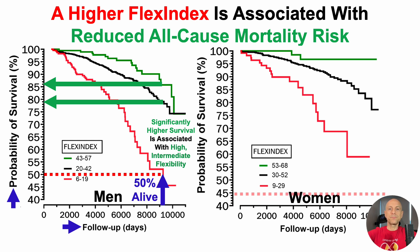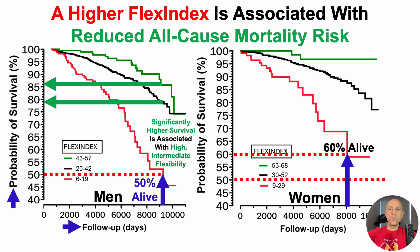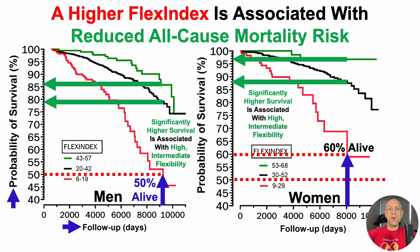What about in women? Looking at 60% survival — since none of the groups reached 50% survival — that's when 60% of the lowest-scoring red group was alive and 40% had died. At that time point, the highest flexibility index score group for women had only about 3% to 4% died, whereas the lowest scoring group had 40% died, and the intermediate flexibility group had only about 12% died. So in women too, there is a significantly higher survival associated with both high and intermediate flexibility.